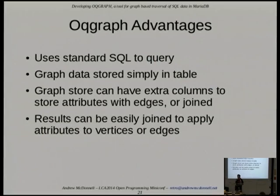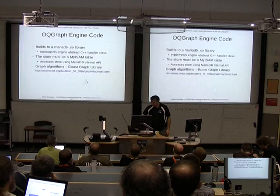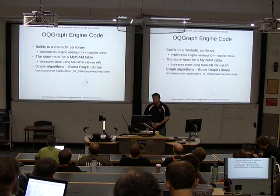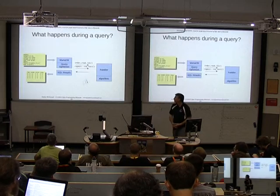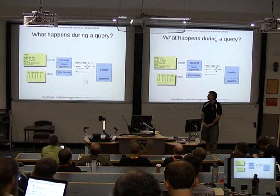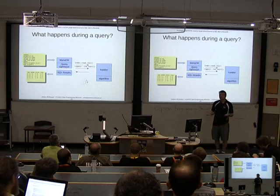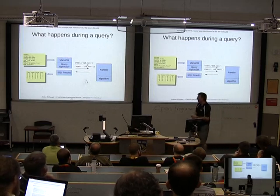The advantages of OQ Graph: you have a normal table with your data, you create the virtual table, and then you do a simple query using the latch and join the results as needed. The algorithms are implemented using the Boost Graph Library, implemented as a handler class — a standard plugin for MariaDB that you can turn on and off. When you do a SELECT, MariaDB's query optimiser recognises it needs to hit the virtual table, the plugin gets called, it runs the graph algorithm, and returns a result table.